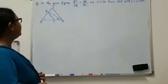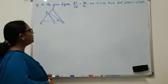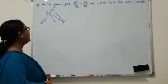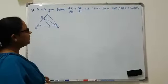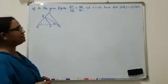In the given figure, QT by PR equal to QR by QS and angle 1 equal to angle 2, prove that triangle PQS is similar to triangle TQR.